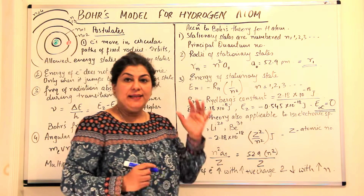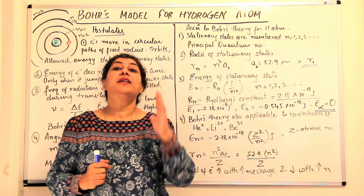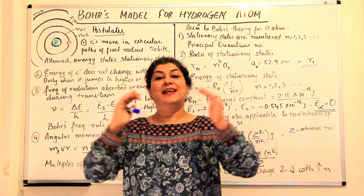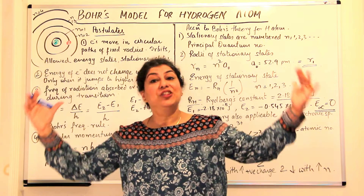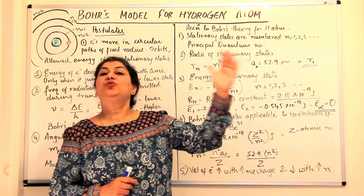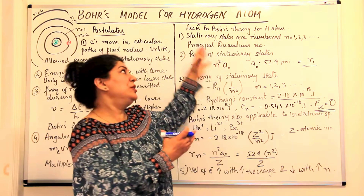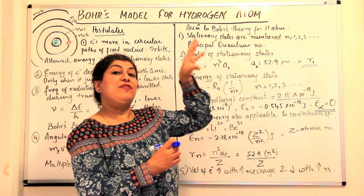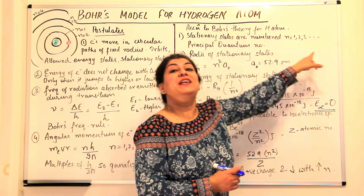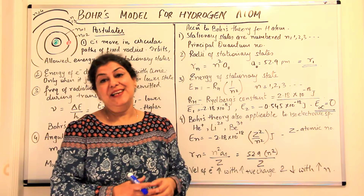The first point is that Bohr said that these energy levels or stationary states are numbered. These numbers represent the first energy state, which was closest to the nucleus, the second, third, and fourth energy state. He called them n, and they were 1, 2, 3, 4 and so on. Later in the quantum mechanical model this idea was adopted and the first quantum number is known as the principal quantum number, which tells you about the energy states, and that also is n = 1, 2, 3. We'll come to that in a later video.